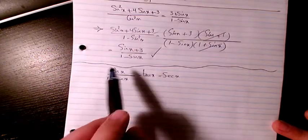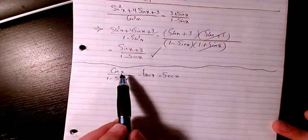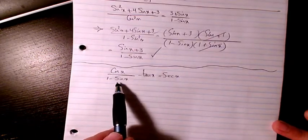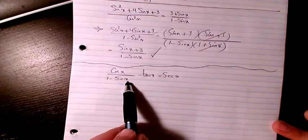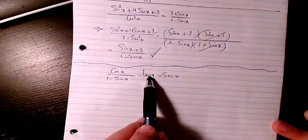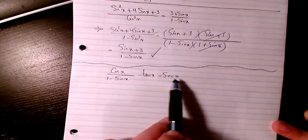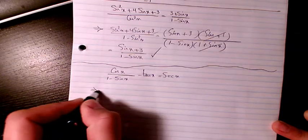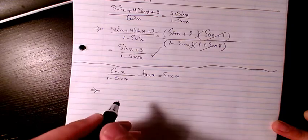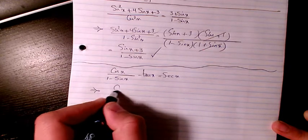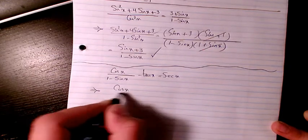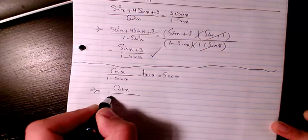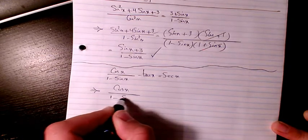In this video, we have cosine x divided by 1 minus sine x, minus tan x, equals secant x. Starting on the left-hand side, I have cosine x divided by 1 minus sine x.